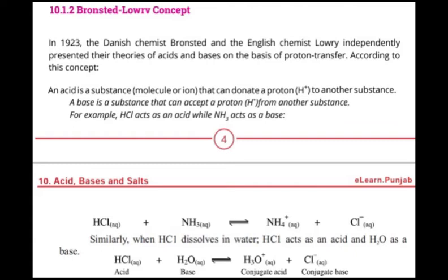First of all, we will discuss the introduction and history of the Lowry-Bronsted Concept. This concept was proposed by the Danish chemist Bronsted and the English chemist Lowry. They both represented this topic independently, and they described the theories of acids and bases on the basis of proton transfer.